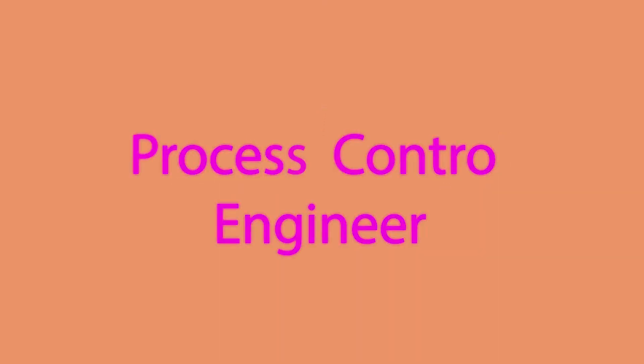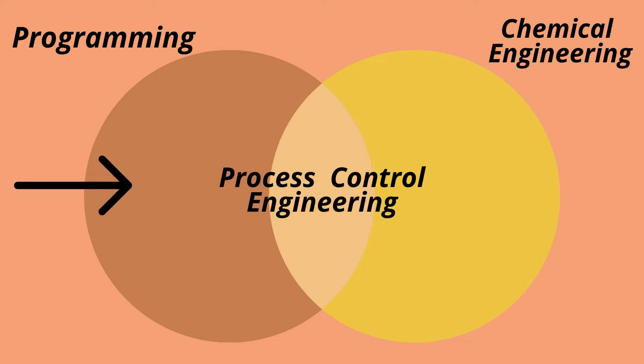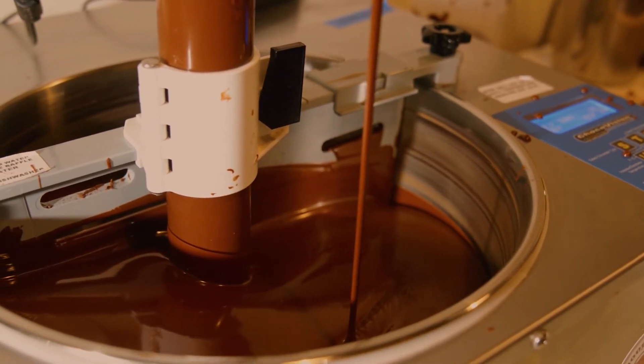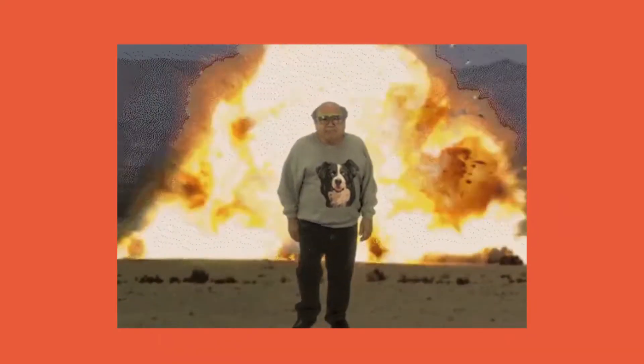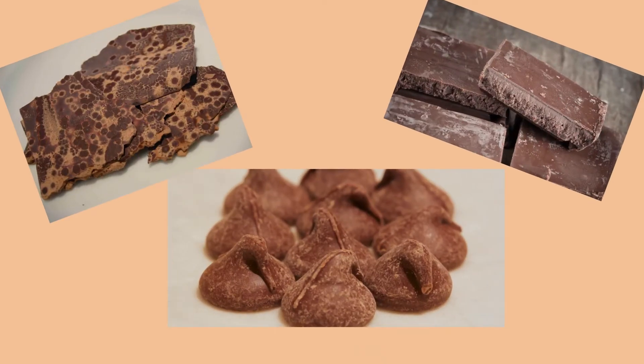The next most common role is process control engineer. I would describe it as the intersection between programming and coding and chemical engineering. If you're interested in coding, programming, and working with data, this could be a perfect role for you. As a process control engineer, you're responsible for designing, testing, and troubleshooting automation processes in manufacturing facilities. For example, think about controlling the temperature at which one product reacts with another — at Hershey's, a batch of cocoa needs to react with milk at exactly the right temperature.